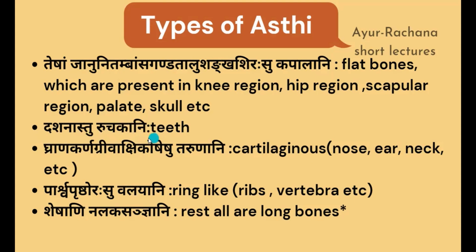Deshanastu ruchakani refers to the teeth, which form the socket-like arrangement in the alveolar sockets — that is ruchakasthi. And gharana karna grivakshi kosheshu tarunani — in the nose, ear, and neck region, we do have cartilaginous structures: the pinna of the ear, the nasal septum which is half formed by cartilage. All these are considered under tarunasthi.